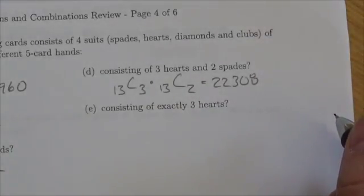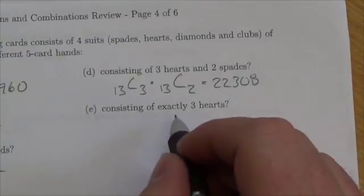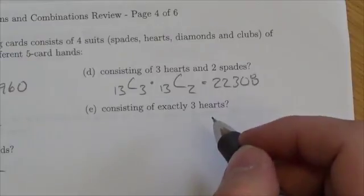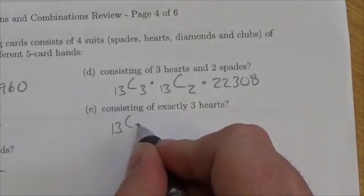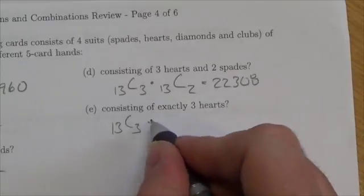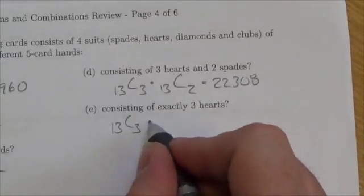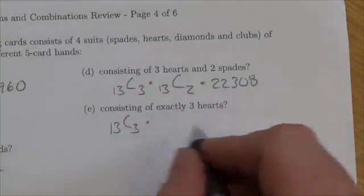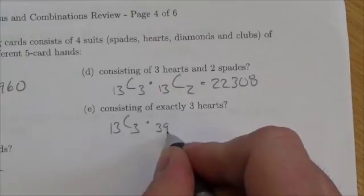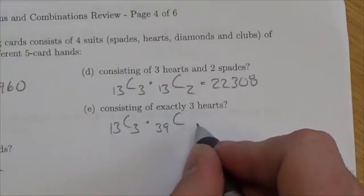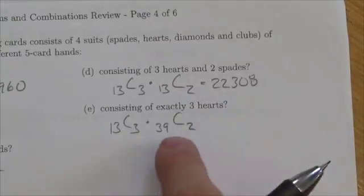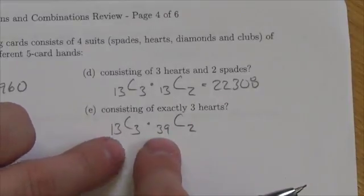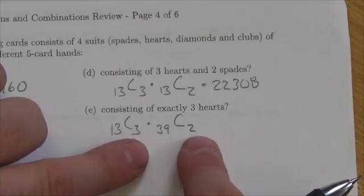Now, to have exactly three hearts, the issue here is we're going to choose three hearts from that group of 13. But once we've done that, we don't want to choose from the hearts anymore. We want to choose from the remaining cards. If there's 52 cards and we get rid of 13, that leaves us with 39 left over, and from that group of 39, we still need to choose two cards. These two numbers are adding up to the total group that we're choosing from. These two numbers are adding up to the total group that we're choosing.